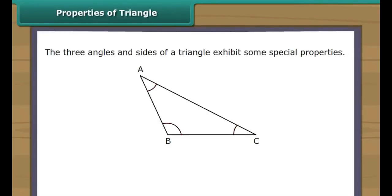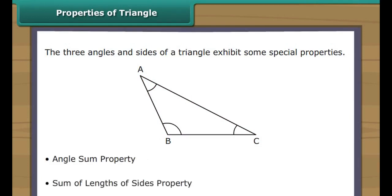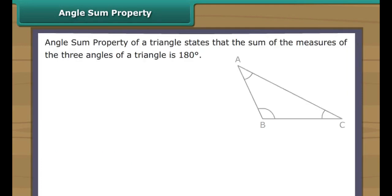The three angles and sides of a triangle exhibit some special properties: the angle sum property and the sum of lengths of sides property. Let us now learn about them one by one. Angle sum property of a triangle states that the sum of the measures of the three angles of a triangle is 180 degrees.